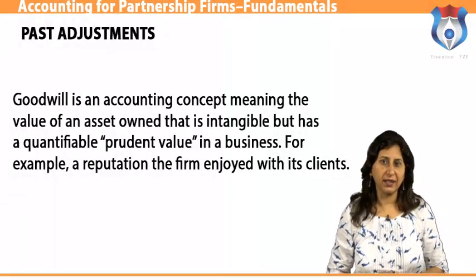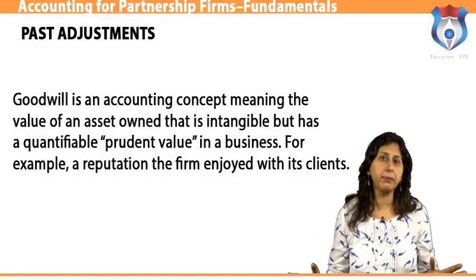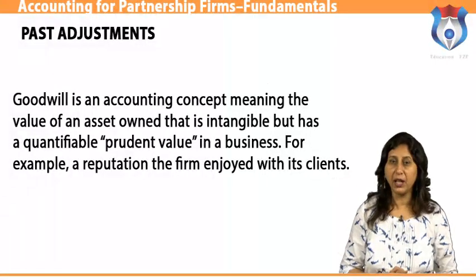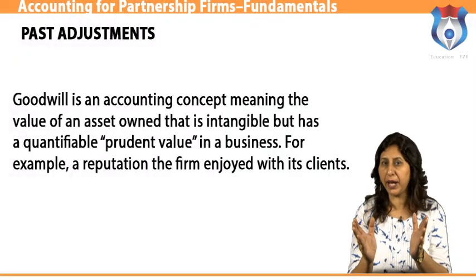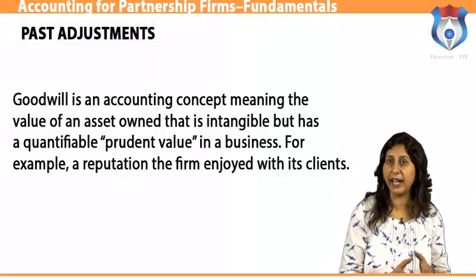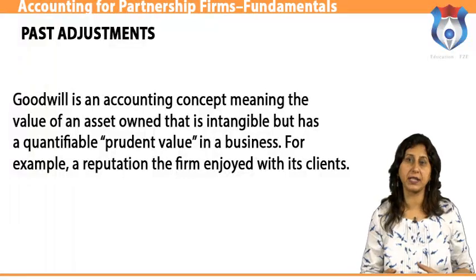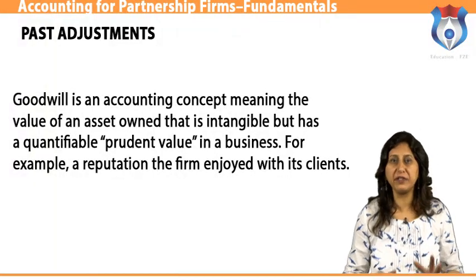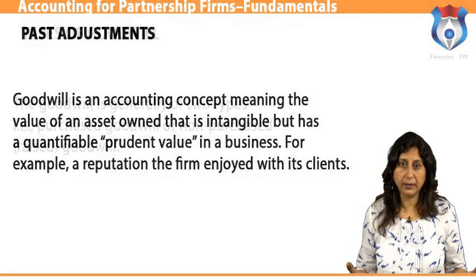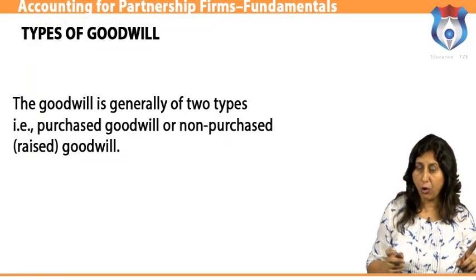In accounting, the monetary value of such advantage is known as goodwill. It is regarded as an intangible asset. Goodwill is the value of the reputation of a firm in respect of the profits expected in future over and above the normal profits. When a person pays for goodwill, they pay for the ability to earn super profits compared to other firms in the same industry. Goodwill can be defined as the present value of a firm's anticipated excess earnings, or the capitalized value attached to the differential profit capacity of a business. Goodwill exists only when the firm earns super profits.